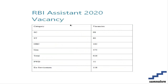There are 926 vacancies in total. For SC it is 98 vacancies, for ST it is 80 vacancies, for OBC it is 182 vacancies, for General it is 473 vacancies, for persons with physical disability it is 51 vacancies, and for ex-servicemen it is 118 vacancies.